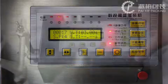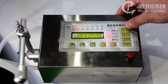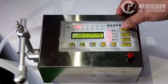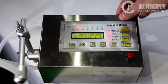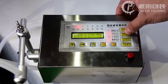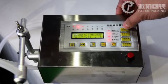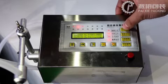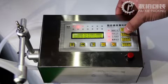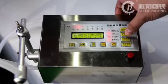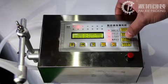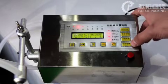Let's test our feeding machine. This button is continuing work, and manual work. This is parameter set. This is zero clearing. This is power on and power off.